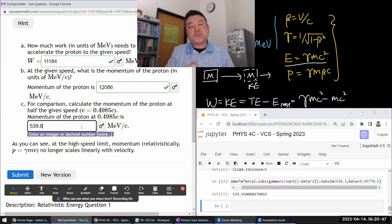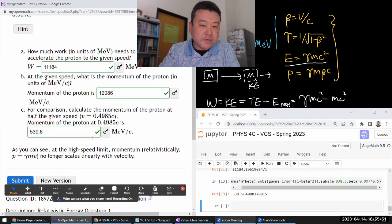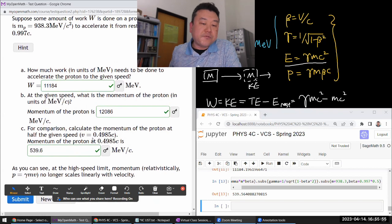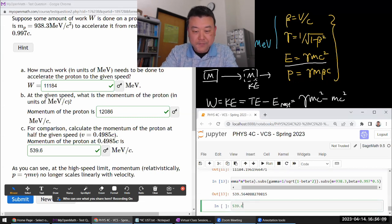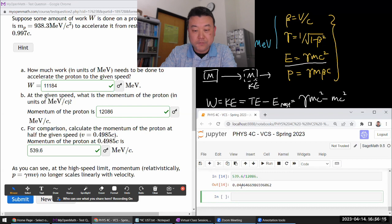539.6. And this is a number sense question, because our non-relativistic intuition says that when you reduce the speed to half, your momentum should be half. But when one of your two speeds is very relativistic, when you make the speed half, your momentum is much less than a half. 539.6 divided by 12086, that's 4.5%. It's a tenth of a half.